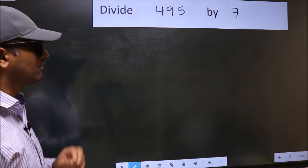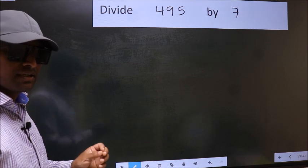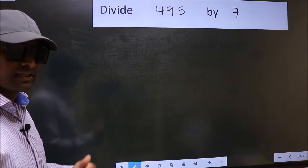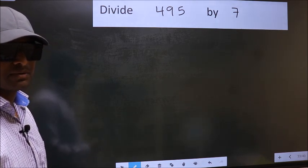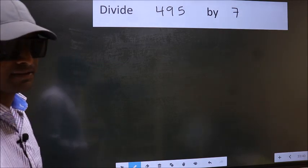Divide 495 by 7. While doing this division, many do this mistake. What is the mistake that they do? I will let you know. But before that, we should frame it in this way.